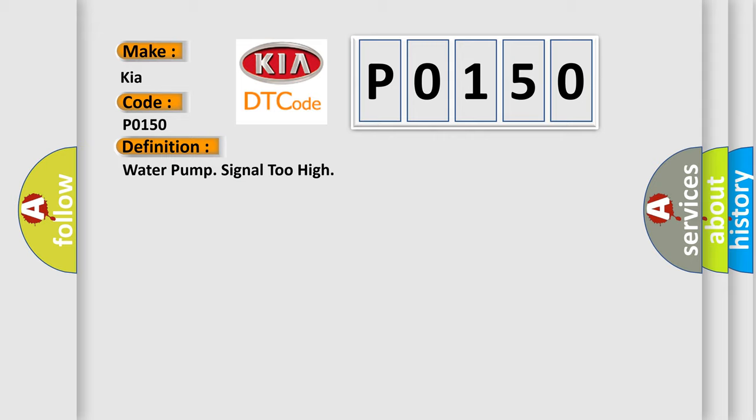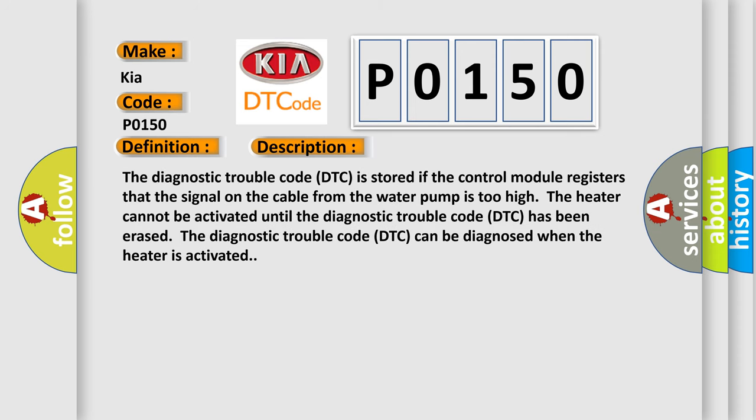And now this is a short description of this DTC code. The Diagnostic Trouble Code DTC is stored if the control module registers that the signal on the cable from the water pump is too high. The heater cannot be activated until the Diagnostic Trouble Code DTC has been erased.